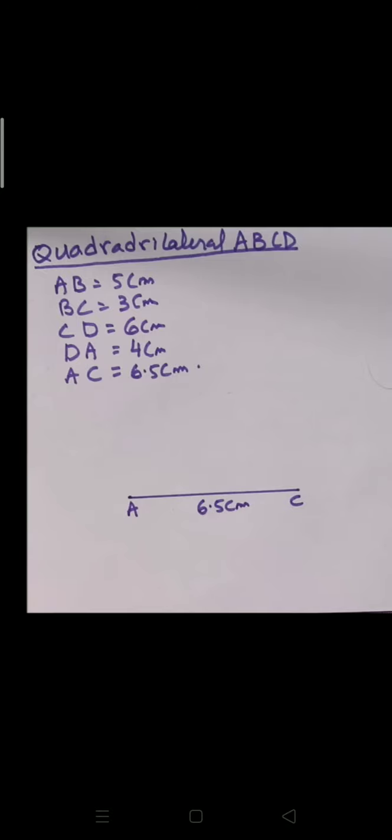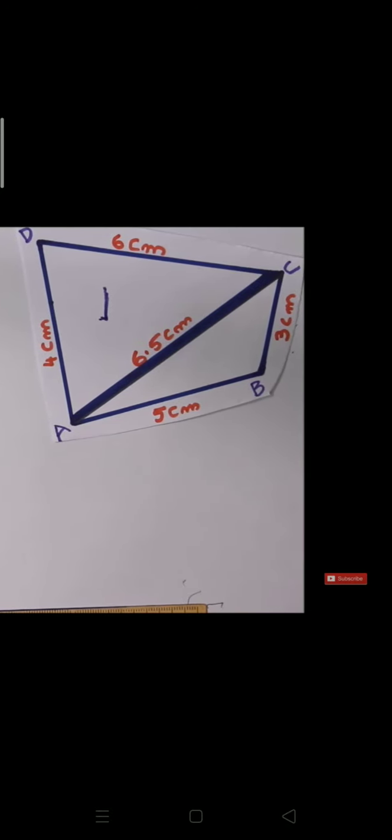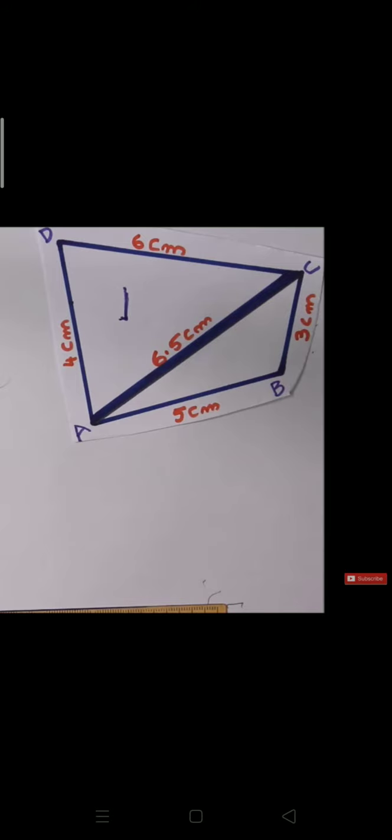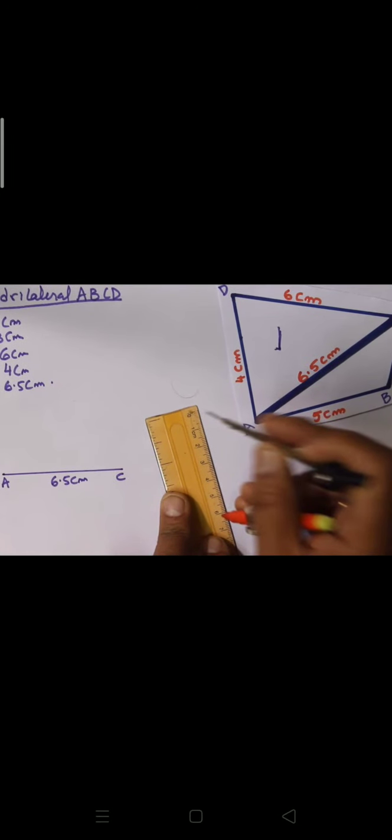Now let's find point D. In our rough figure, D is upside, so we need to locate it above AC. AD is 4 cm, so with a compass set to 4 cm, place the compass point on A and draw an arc upward.